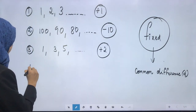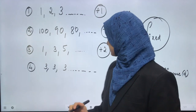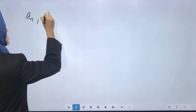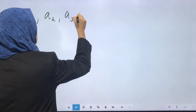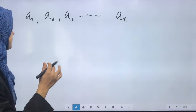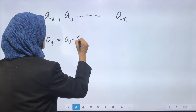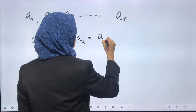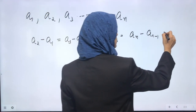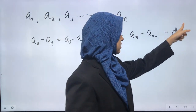The common difference, denoted by D, can be positive, negative, or even zero. For example, a constant sequence is also an AP with common difference 0. If we write the terms as A1, A2, A3, up to AN, then it is an AP if A2 minus A1 equals A3 minus A2 equals A4 minus A3, and so on, all equal to D — that is, the difference between consecutive terms is constant.